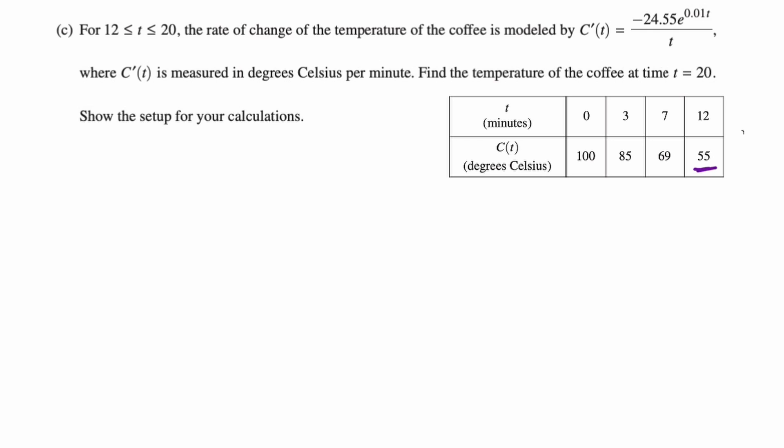So I'm going to write down what I'm doing. So the temperature at 20 is going to be the temperature at 12, your starting point, plus whatever the displacement in temperature is between 12 and 20. So that's going to be plus the integral from 12 to 20 of C'(t) dt.